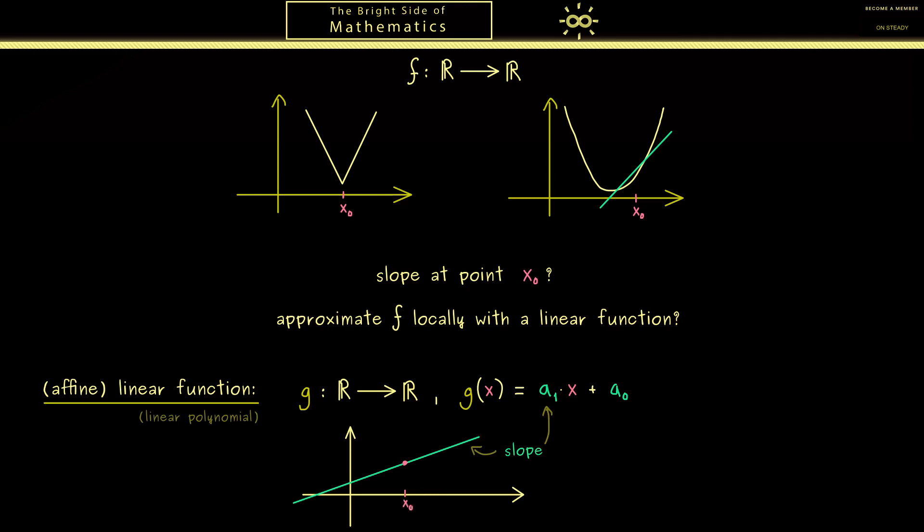Then we would write a constant m times (x minus x0) plus a constant c. Then of course m is the same slope we called a1 on the left hand side. Of course for us it's now simpler to give it a new name. However then this means that in general the constant c is not the same as the constant a0.